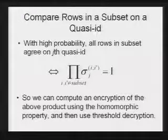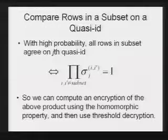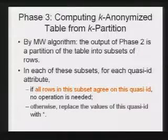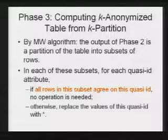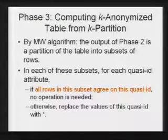The miner compares this product to 1, and using this observation, he knows whether he should suppress the entry — because the entry should be suppressed if and only if all those in this subset agree on this quasi-ID.